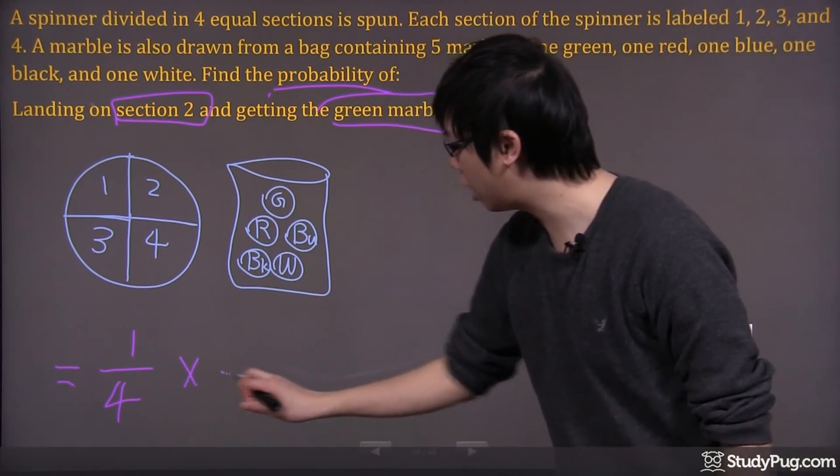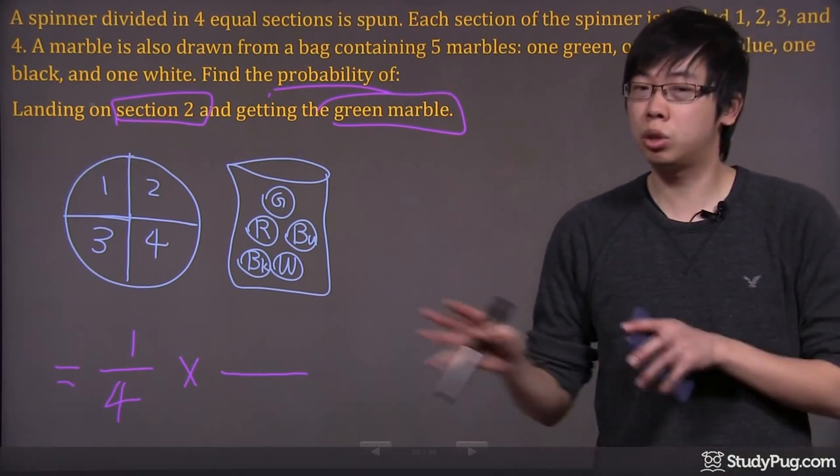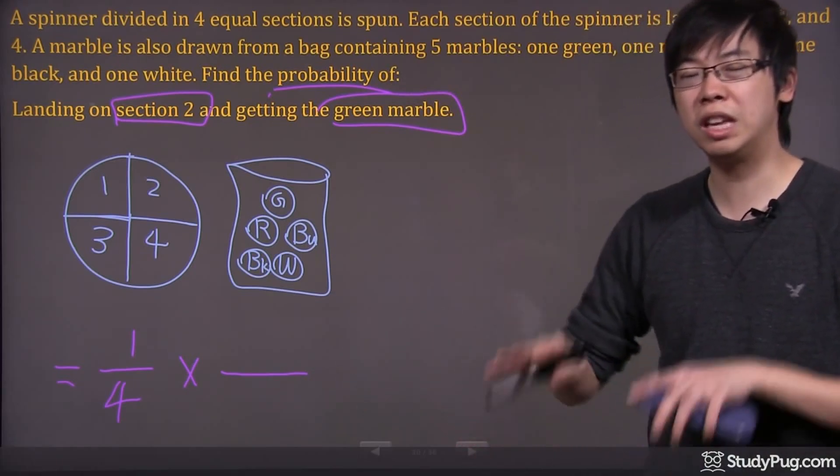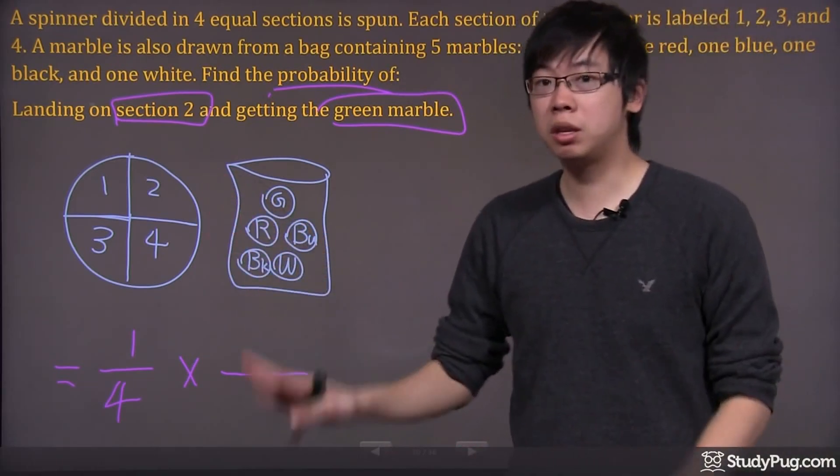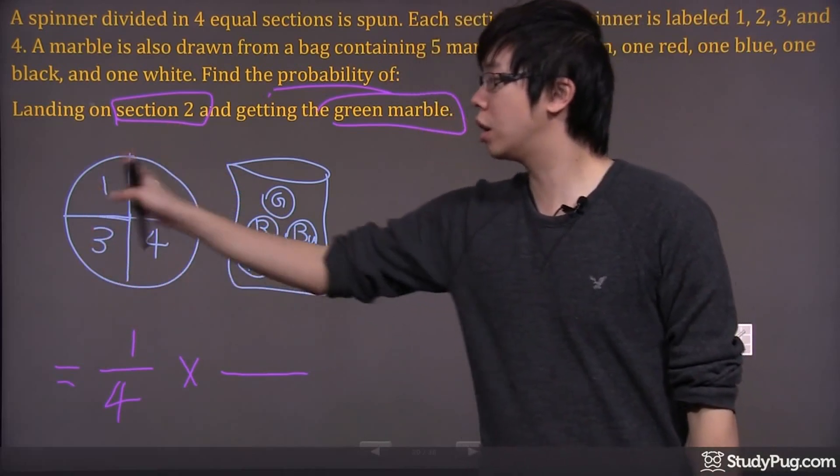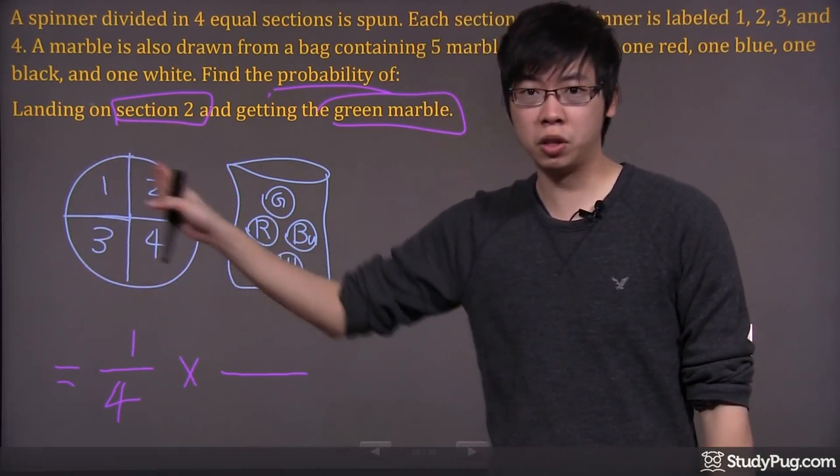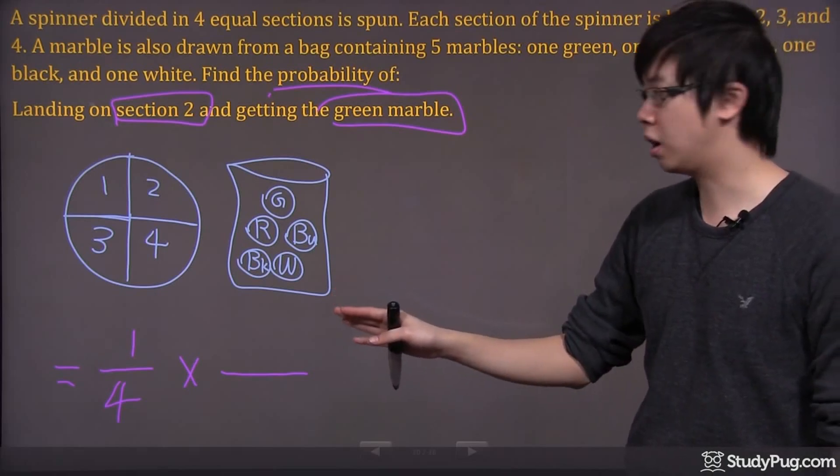Now you're going to multiply. Remember, these are two different events. They're called independent, which means the outcome from the first event does not affect the second event.